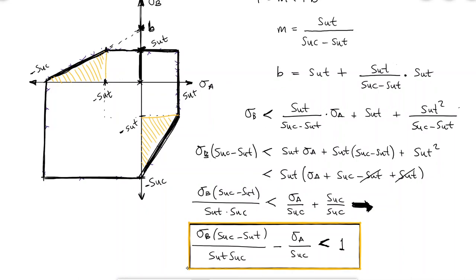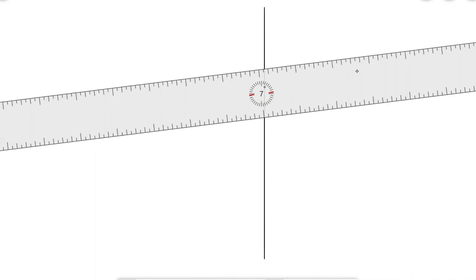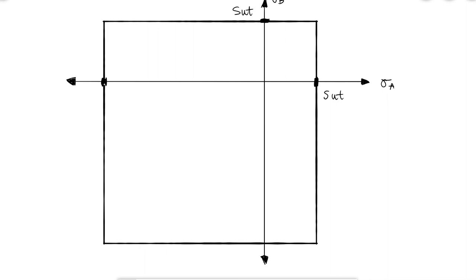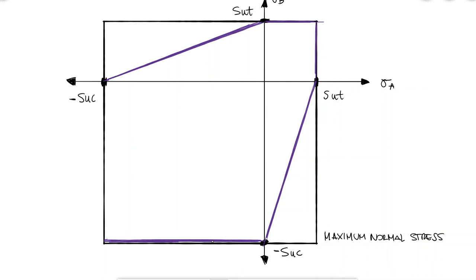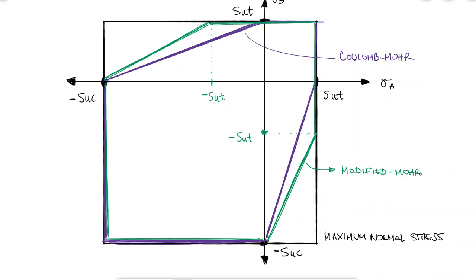If we sum up all three fracture criteria for brittle materials on a single σA–σB diagram, we see the shifted square for the maximum normal stress criterion, a diagonal line connecting minus SUC to SUT in quadrants 2 and 4 for the Coulomb-Mohr criterion, and the diagonal line connecting minus SUC and minus SUT for the modified Mohr criterion. If you want to check out some simple examples using these failure criteria and calculating the factor of safety for different cases, make sure to check the link in the description below.